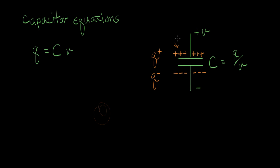What I want to do now is develop some sort of expression that relates the current through a capacitor to the voltage — an IV characteristic. This will correspond to something like Ohm's law for a capacitor: what relates the current to the voltage.